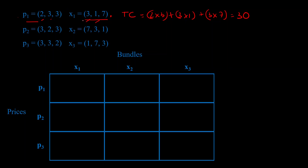That's the cost of bundle X1 at price P1. Now let's say instead of buying X1, you were buying bundle X2 at the same price. If the total cost for X2 at P1 comes out to 25, that's less than the 30 you're paying for X1. So if you could afford X1 you could easily afford X2, but you still chose X1 — that can only mean you prefer X1 over X2. That's the core idea behind WARP and SARP.